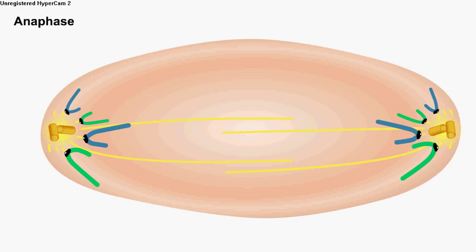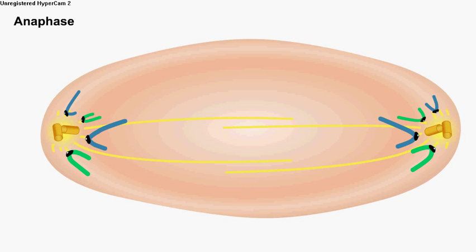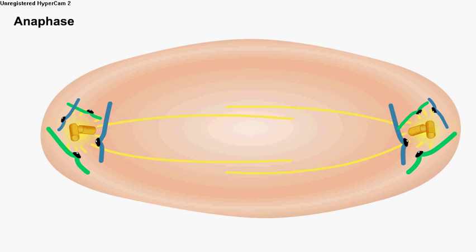This segregation of the chromatids takes place during the third phase of mitosis, known as anaphase. When anaphase is complete, the microtubules release the chromatids, which will constitute the chromosomes of the new daughter cells.